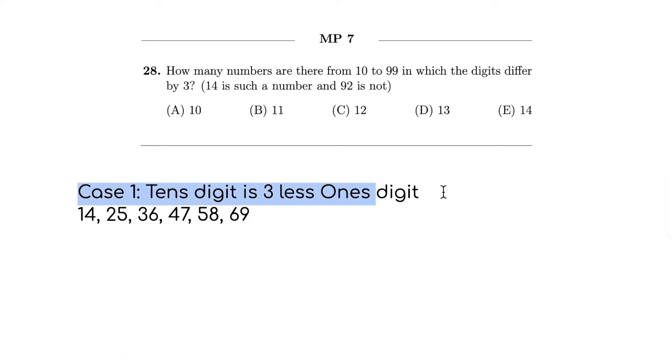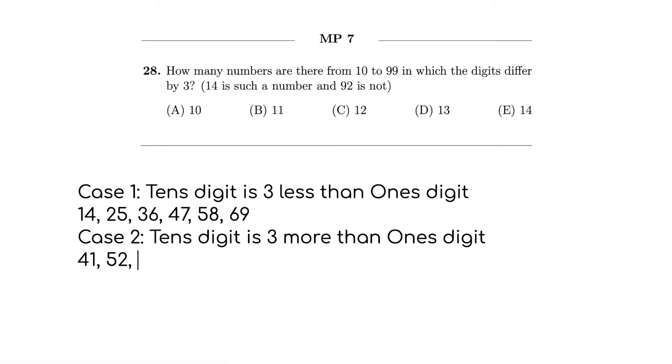Now there's also the other case, case two, where the tens digit is three more than the ones digit. So that means it's actually just reversing all of these, so we just have 41, 52, 63, 74, 85, and 96. However, we are actually missing something, because here we can't start with zero, so there is no zero, three. However, here we can do a three, zero, so 30 is also one of the options.